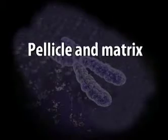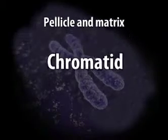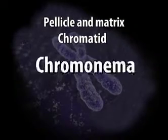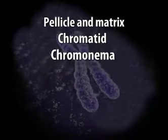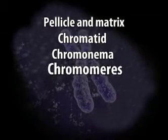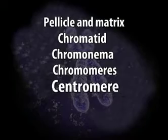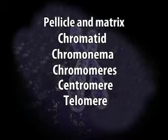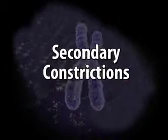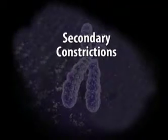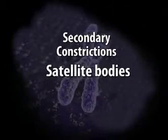A chromosome is usually composed of the following parts: pellicle and matrix, chromatid, chromonema, chromomeres, centromere, telomere, secondary constriction, and satellite bodies.